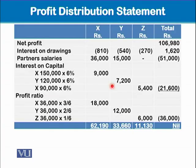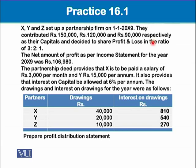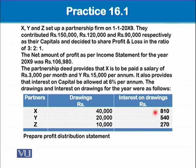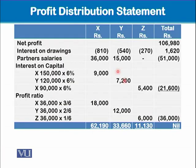This is the format of the profit distribution statement, which has a total column. The total net profit of 106,980 is placed there first. Then interest on drawings is added to the profit in the total column — figures 840, 540, and 270 — but it is subtracted from each partner's individual column for working purposes.